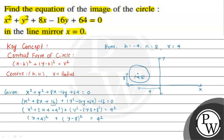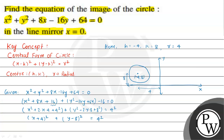Now we need the mirror image about the line x = 0, which is the y-axis. The line x = 0 is the y-axis, so this is our mirror line.